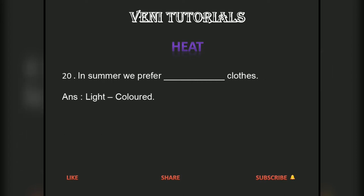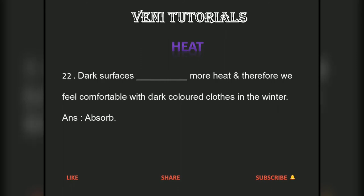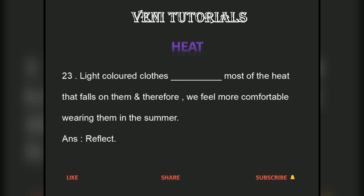In summer we prefer light-colored clothes. In winter we usually wear dark-colored clothes, as dark colors absorb heat and therefore we feel comfortable with dark-colored clothes in winter. Light-colored clothes reflect most of the heat that falls on them, and therefore we feel more comfortable wearing them in summer.